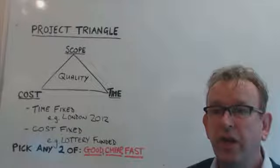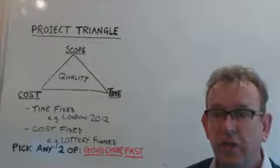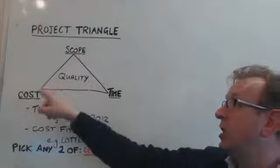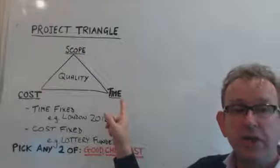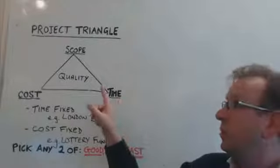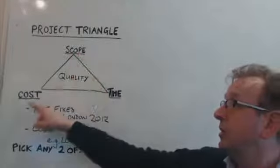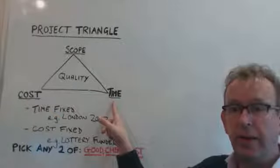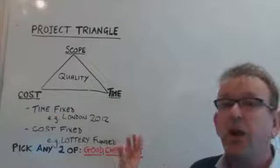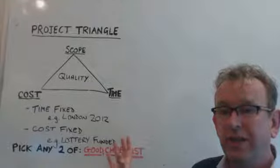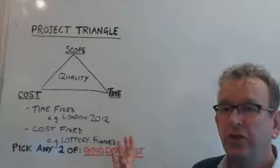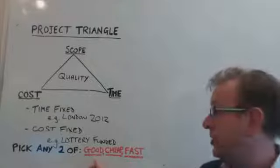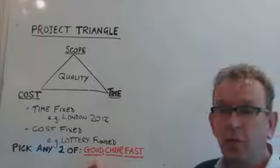There's an alternative way of viewing the project triangle. So instead of having the three corners as scope, cost, and time, you might consider replacing those with good, cheap, and quick. Some people say that on a project it's only realistic to aim to achieve two of those three things — so pick any two of good, cheap, and fast.